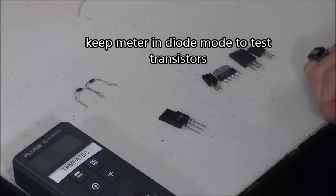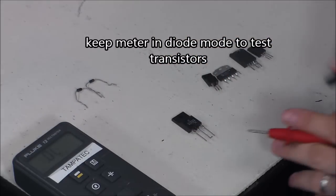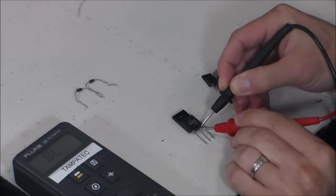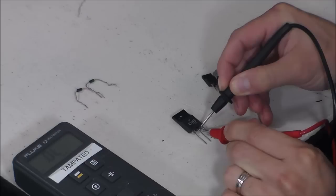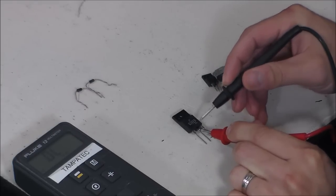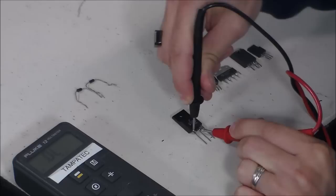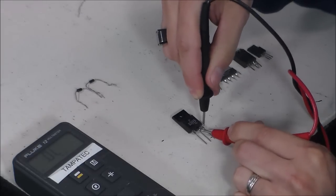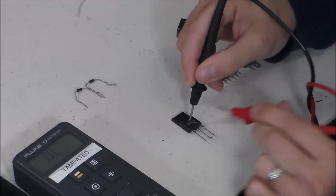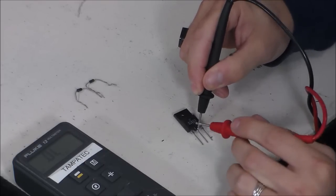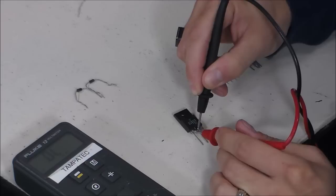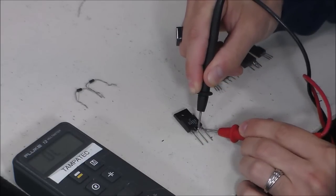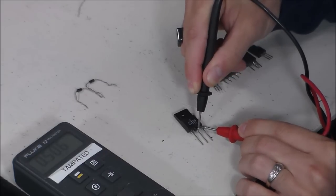So, now this is a real transistor. I'm going to show you how to read that. And put my black lead at the end, my red lead right here in the middle. Leave my red lead in the middle, and put my black lead on the other end. And I get OL, and OL. So this is going to be a PNP. I get 0.4 right here, and 0.4.